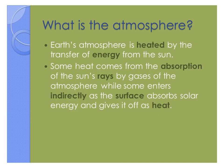Earth's atmosphere is heated by the transfer of energy from the sun. Some heat comes from absorbing the rays by the gases in the atmosphere. And some of the rays enter indirectly because the surface absorbs the energy and then in turn gives it off as heat — that's something called radiating from the surface itself.